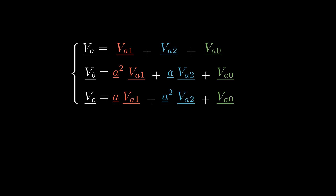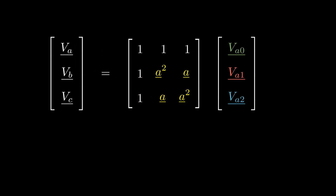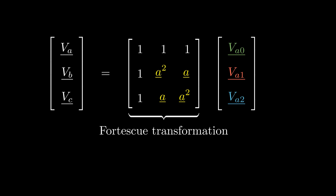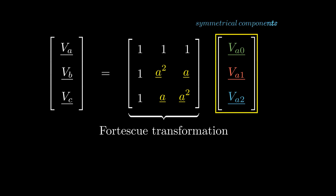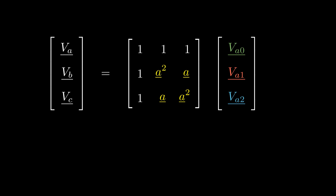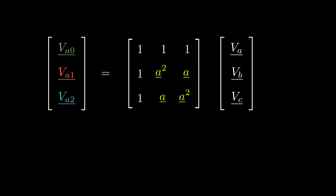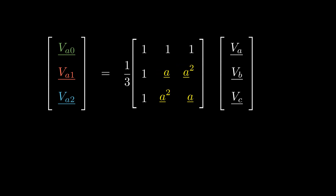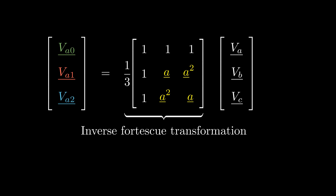We can now express these relationships as a matrix multiplication. This is known as the Fortescue transformation, which converts the three symmetrical components into the original three-phase system. In practice, we often want to decompose an unbalanced system into its three symmetrical components to make analysis easier. To do that, we invert the matrix, giving us what is called the inverse Fortescue transformation.